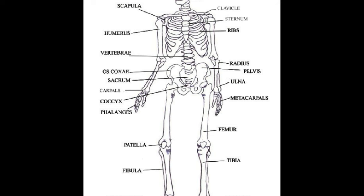To remember the names of the chest and back bones, remember C S R and V, which stand for clavicle, sternum, ribs, and vertebra.